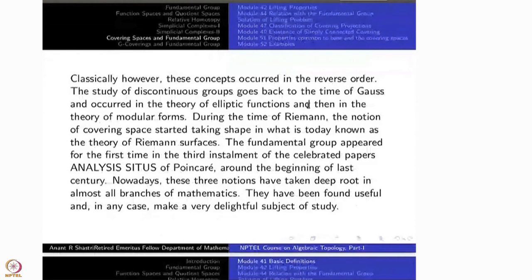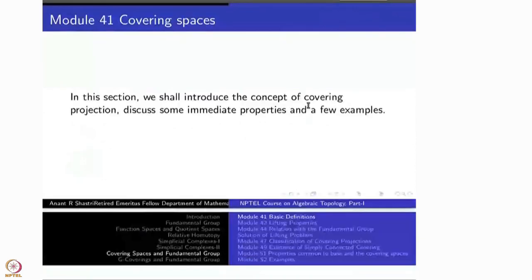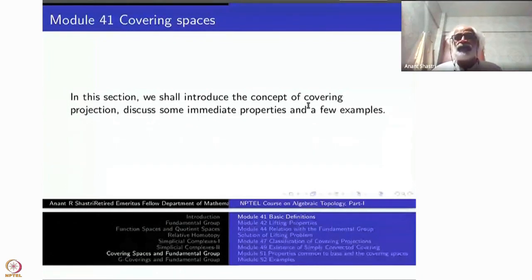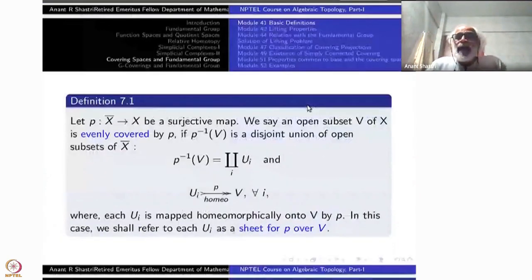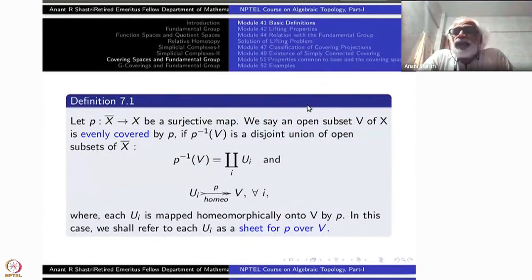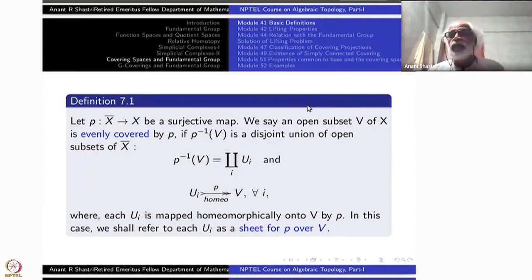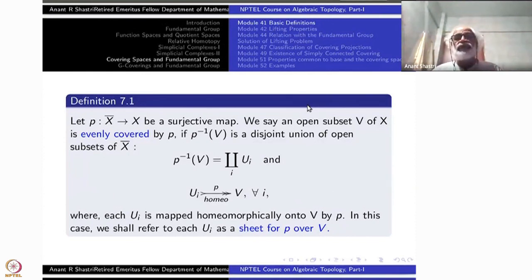So let us begin with simple definitions and then consequences, and later we will give some examples. We start with a continuous surjective function from one space to another. The first space I'm denoting by X-bar — nothing to do with closure — and X is a space, while X-bar is another space; p is a map from X-bar to X. This is standard notation for a covering projection.